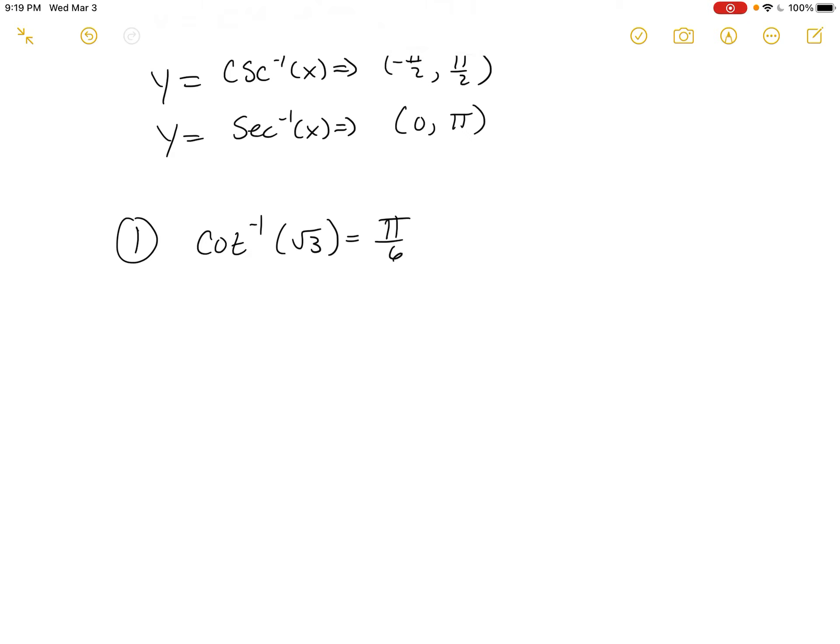If we think about the cotangent being cosine over sine, who's going to give me a nice root 3? It's going to be the pi over 6 angle. That's going to take the root 3 over 2 and divide it by the 1 half and we get pi over 6. It's going to be positive.